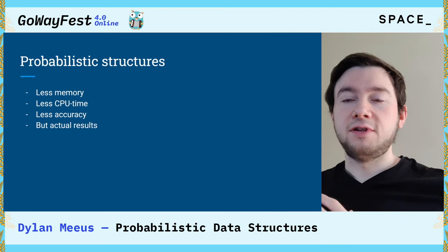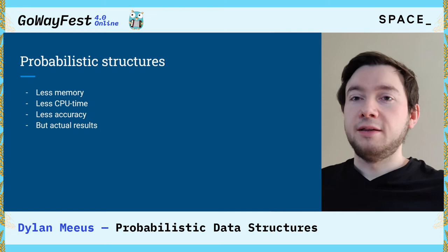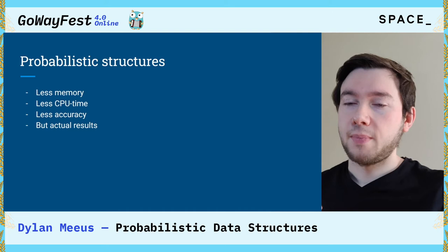Such structures can be used as a type of caching layer that checks your code really quickly — in our case, checking really quickly if a username is taken. But then we have to find a way to deal with this false positive probability, so we'll get into that later.